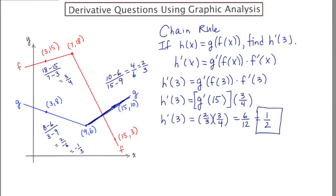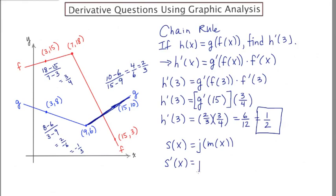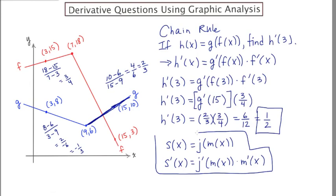The perhaps trickiest part was identifying that second step. To illustrate, if s of x equals j of m of x, we again have a composition requiring the chain rule. The derivative is j prime of m of x times m prime of x — the derivative of the outer function first, multiplied by the derivative of the inner function. If you get this concept, you should be good with the chain rule.